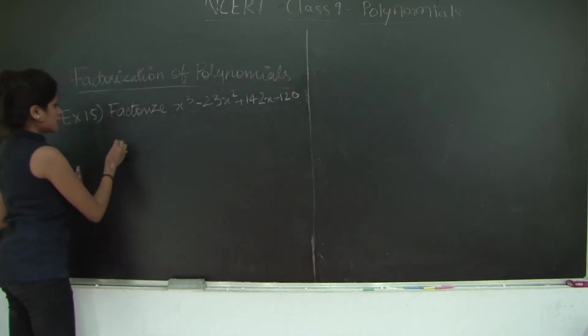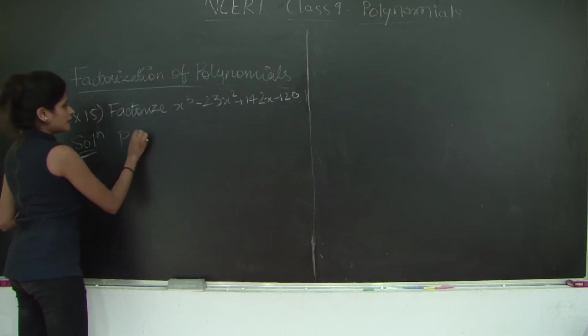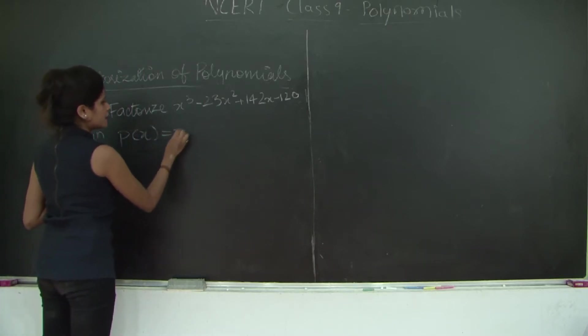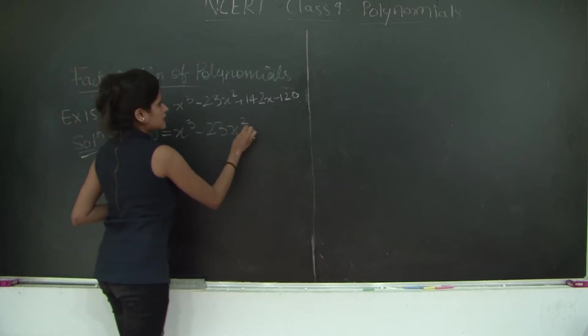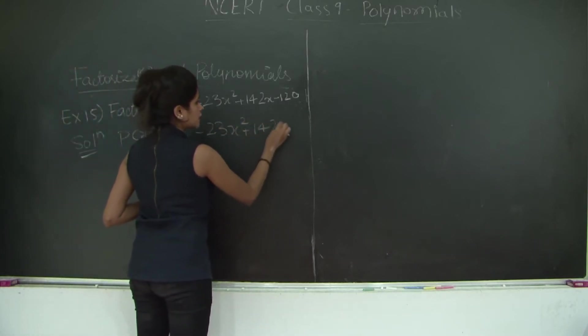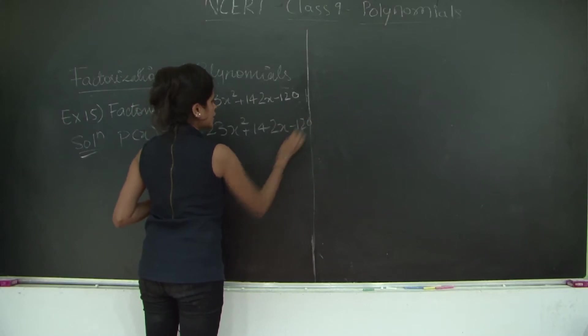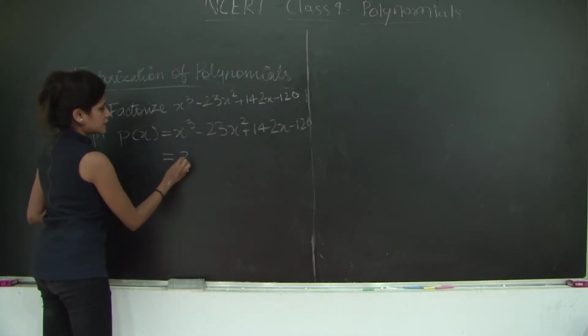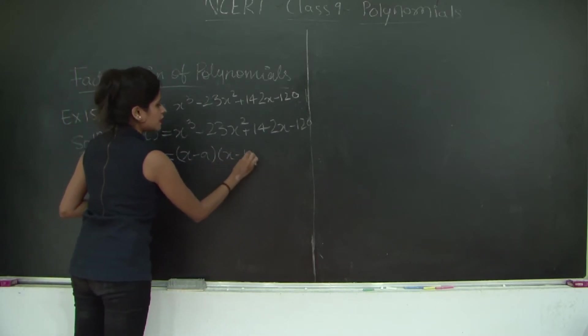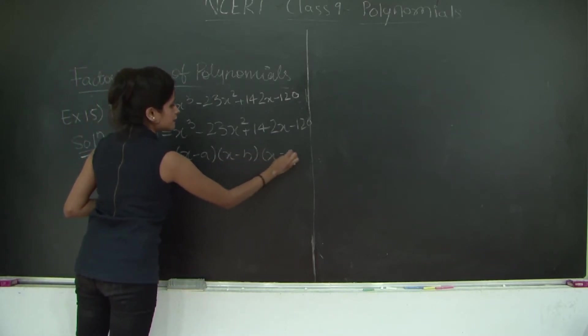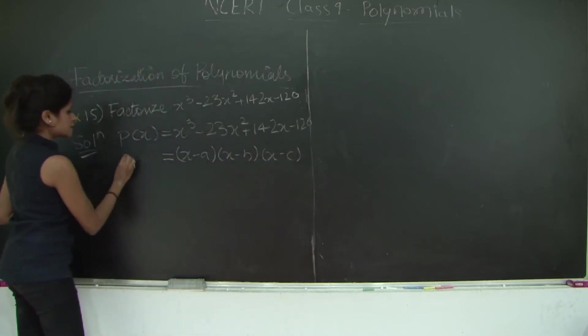First of all, I am going to name this polynomial. It's a polynomial in variable x and can be written as x³ - 23x² + 142x - 120. This can be further rewritten as (x - a)(x - b)(x - c). This is p(x).